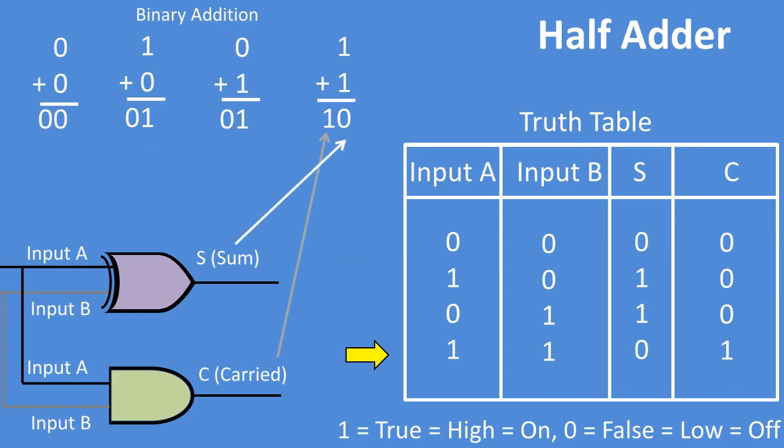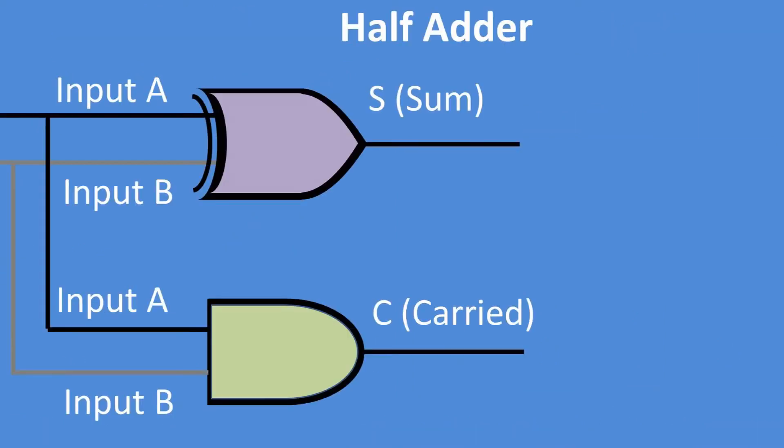If we add one plus one, this equals zero, which is the output for the exclusive OR or the sum output, and the next bit flips to a one, which is the carry bit and is tied to the AND gate output. The flaw of a half adder is that we can only generate a carry output and cannot take a carry input.